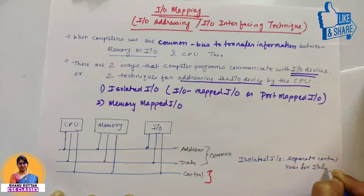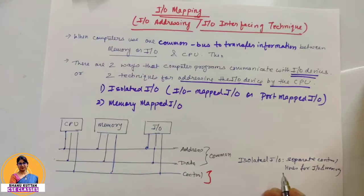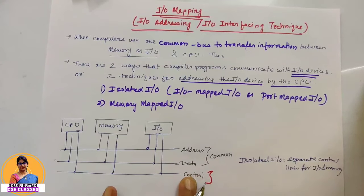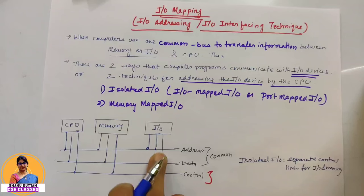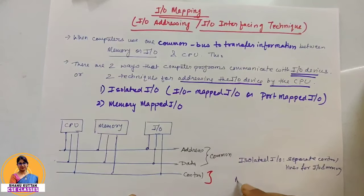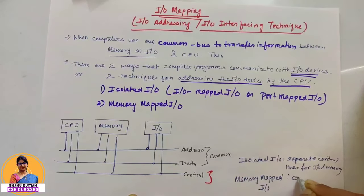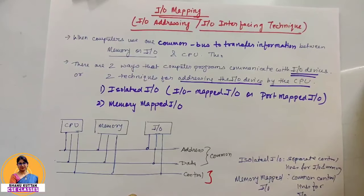In memory mapped I/O, the control of I/O is common — meaning there is a common control line for both I/O and memory. That's why we call it I/O mapped into memory. So common control lines for I/O and memory is the major difference between the two techniques.